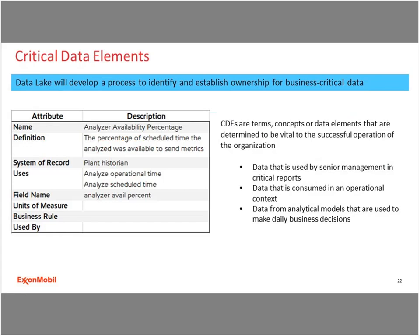Data owners and data stewards need to ensure that the appropriate business and technical metadata is captured for critical data elements in the data catalog. Not every element is a critical data element — these are terms and concepts determined to be vital to the successful operation of an organization. Things such as data used by senior management in critical decisions, data consumed in an operational context, or data from analytical models used to make daily decisions. Here we see an example of the critical data element metadata required fields. We're still developing our list of required attributes as part of the enterprise metadata strategy.